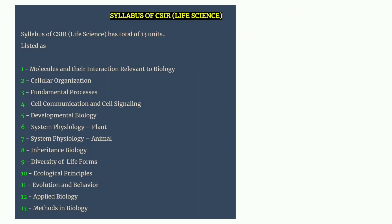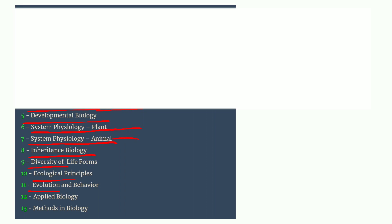To begin with, let us discuss the syllabus of CSIR. The CSIR Life Science syllabus has a total of 13 units — molecules and interaction (basically biochemistry), cell biology, molecular biology, signaling and cell communication, developmental biology, system physiology, plant physiology, animal physiology, inheritance biology, genetics, diversity, ecology, evolution, applied biology, and methods or techniques.